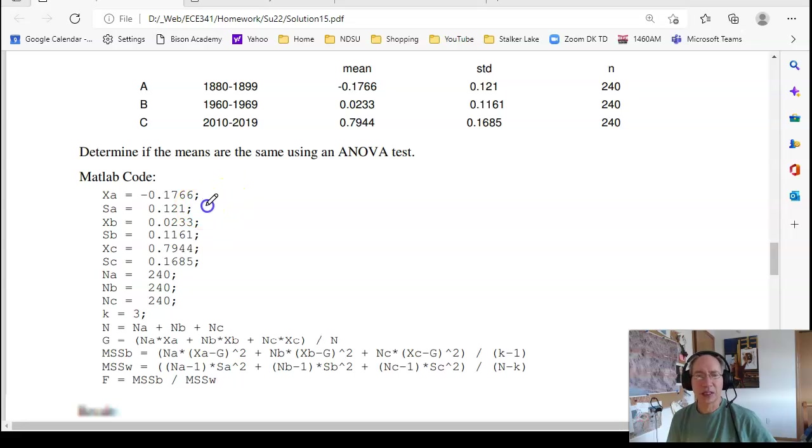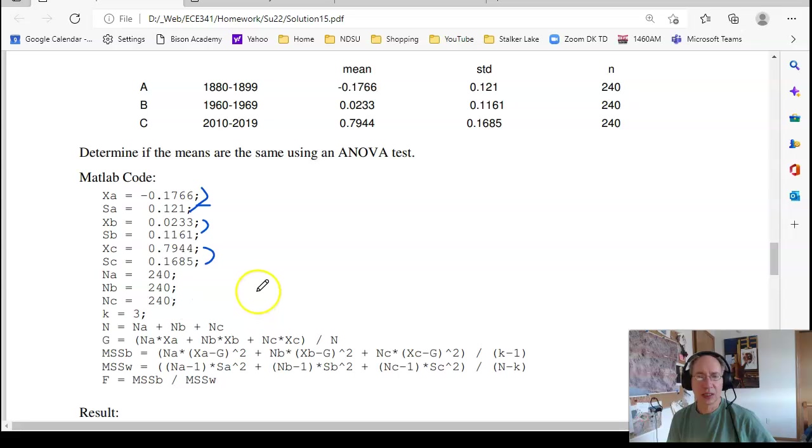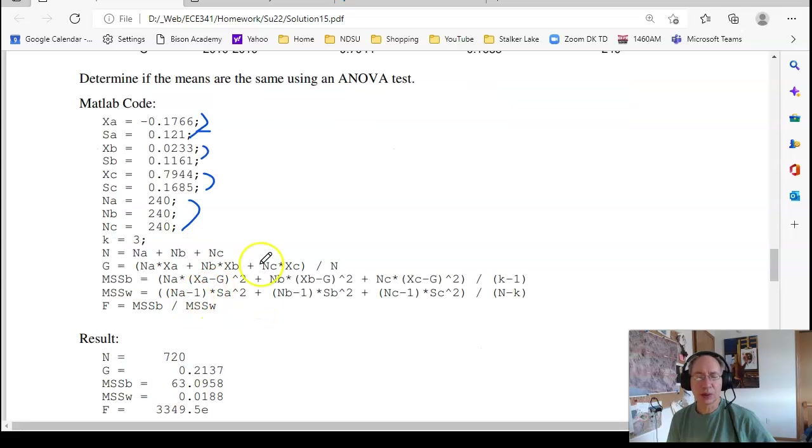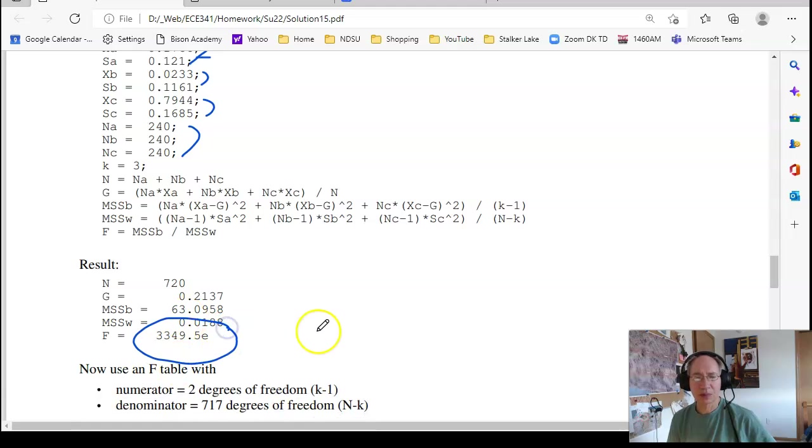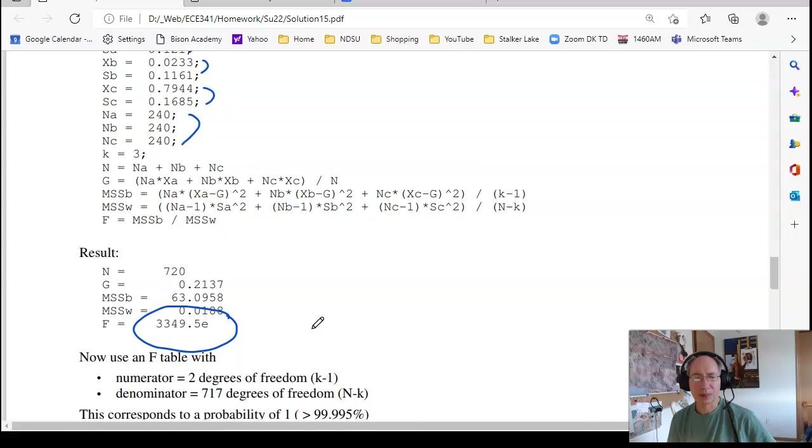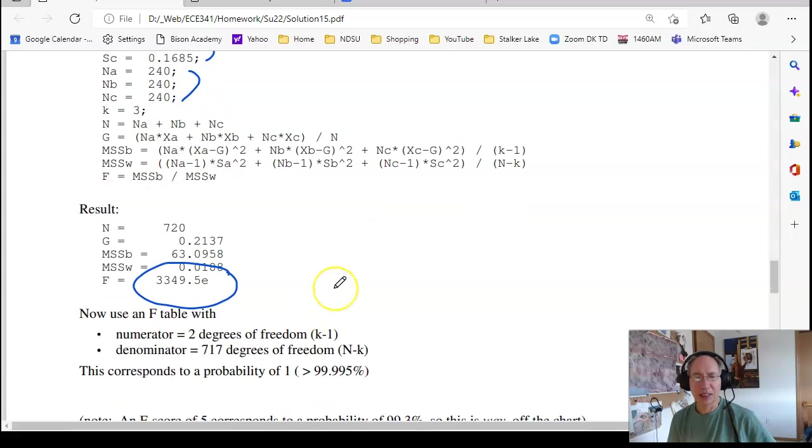So here again, the trick: input the mean and standard deviation. Calculate the total number of data points, the global average, the mean sum squared between data sets, the mean sum squared within data sets, and the F-score. That's what I want. This is a huge F number, probably going to be one. So yeah, temperatures are not consistent—they are changing.